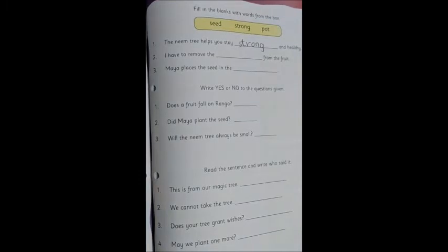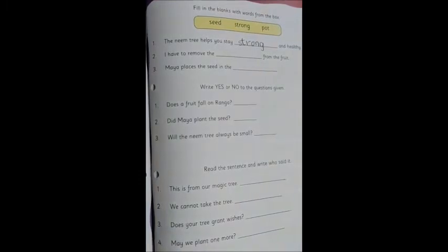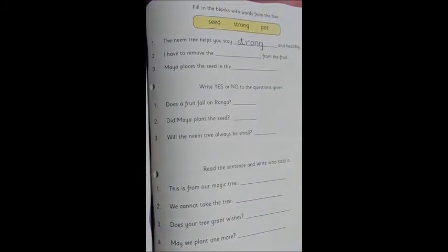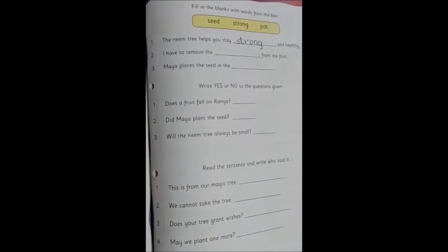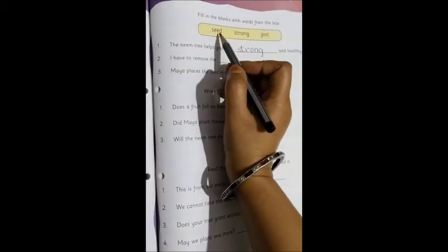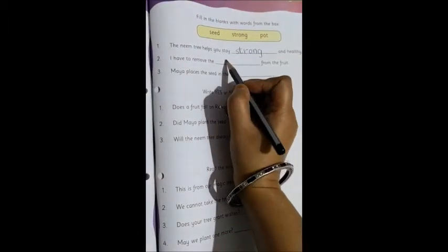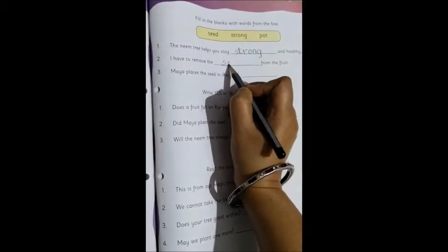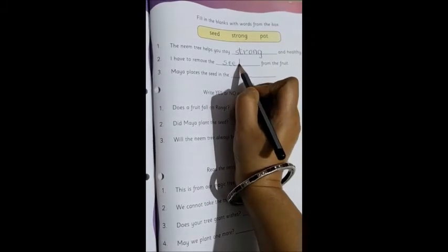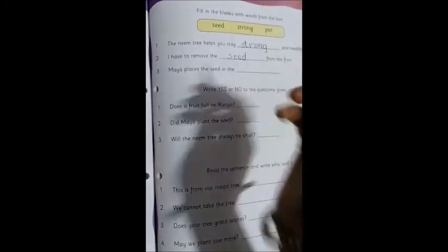Moving on to the next one. I have to remove the dash from the fruit. So what do you remove from the fruit? The seed. Yes. So we will write the next word, that is seed. S-E-E-D. Seed.